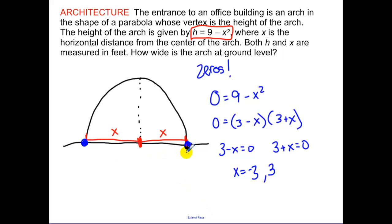So we get x equals negative three. And x equals three. So that means that from my center over, that's three feet. From my center over, that's also three feet. So what's the whole distance? How wide is it from end to end? Well, that's going to be six feet.